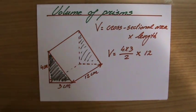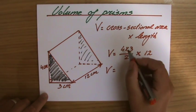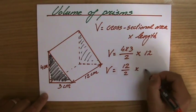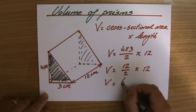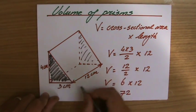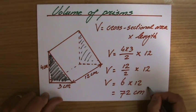So the volume of my prism, 4 times 3, that is 12 divided by 2 times 12. So that is 6 times 12. And that will be 72 centimeters cubed.